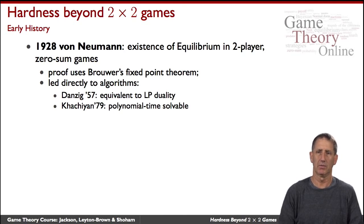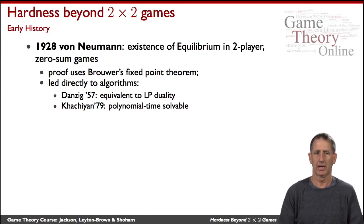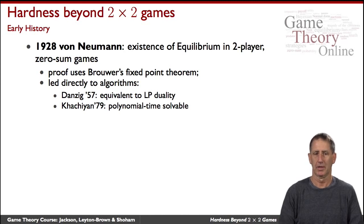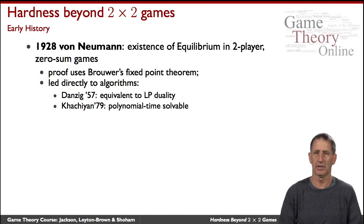John von Neumann, one of the founders of modern game theory, when he investigated zero-sum games, proved the existence of equilibrium there and used what's known as the Brouwer Fixed Point Theorem. That led directly to algorithms for computing fixed points in linear programs. First there was Dantzig's algorithm, really equivalent to what in modern days is called LP-duality, and it's an exponential procedure, although in practice used widely.